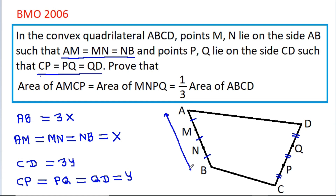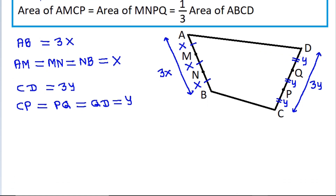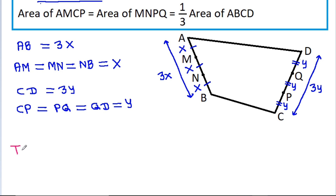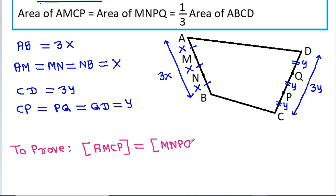AB is 3x, and AM is x, MN is x, and NB is x. And CD is 3y, and CP is y, PQ is y, and QD is y. And we have to prove area of AMCP is equal to area of MNPQ is equal to 1 by 3 times area of ABCD.